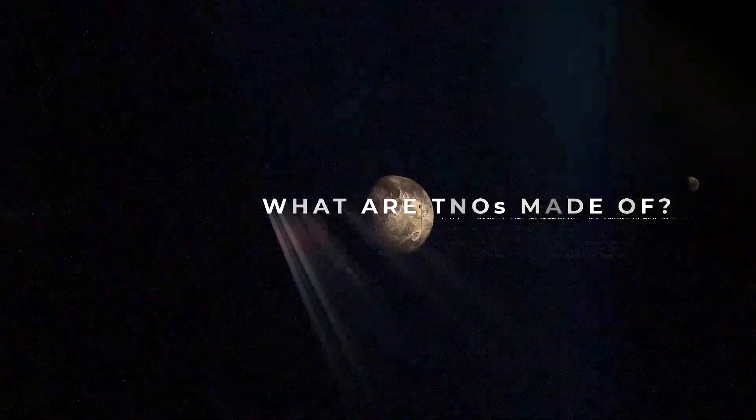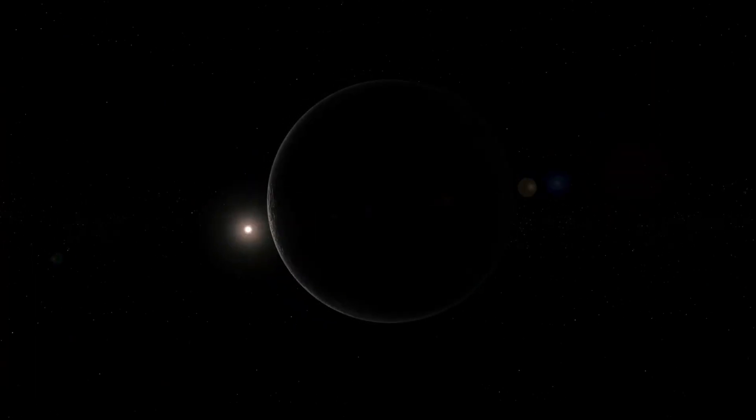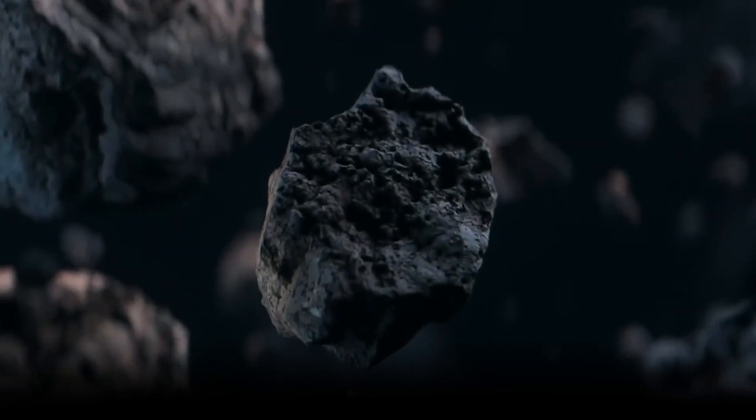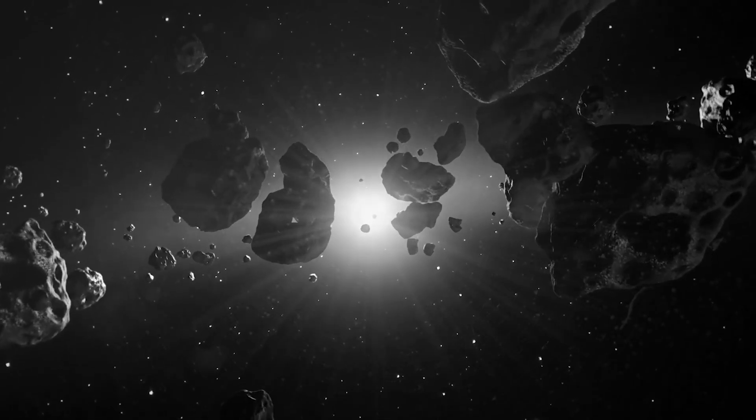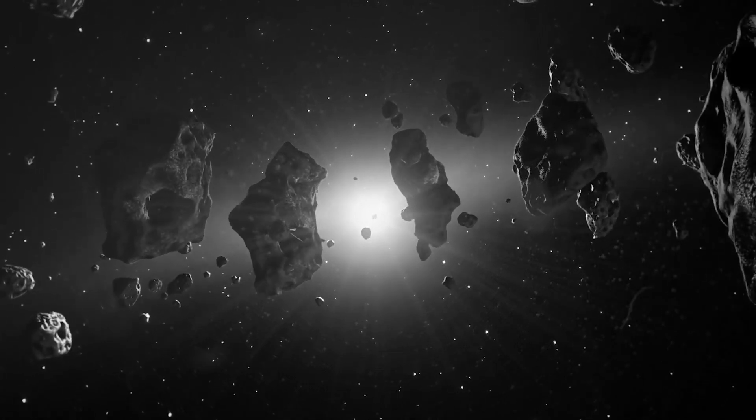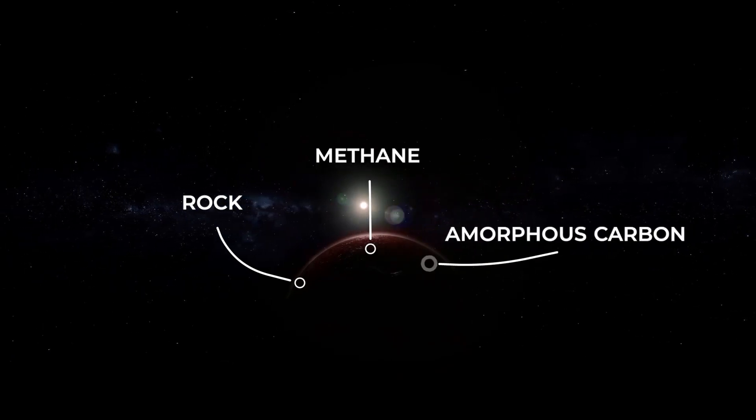What are the trans-Neptunian objects made of? The team working with the TNOs was also tasked with figuring out what these objects are composed of. After studying the orbits and behavior of all the trans-Neptunian objects found, astronomers believe that they are primarily composed of various amounts of rock, volatile ices like methane, and amorphous carbon.